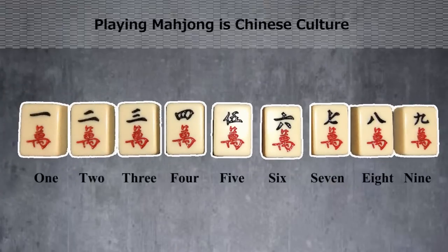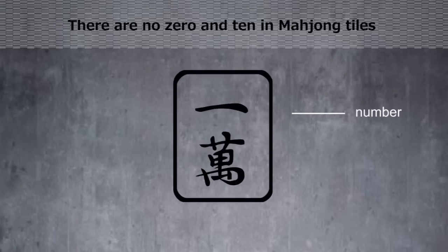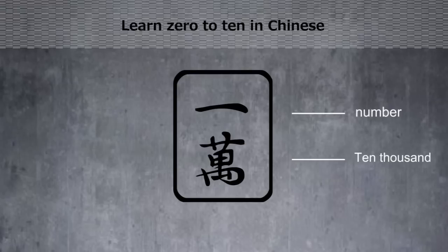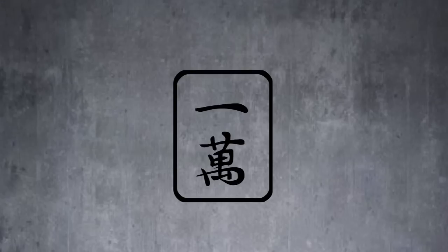In this lesson, I will be using mahjong tiles to illustrate numbers. As you can see from a mahjong tile, the first Chinese character is a number. And for the second character, you don't have to worry about it in this lesson. Alright, let's begin.